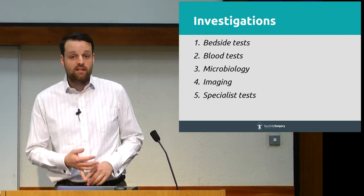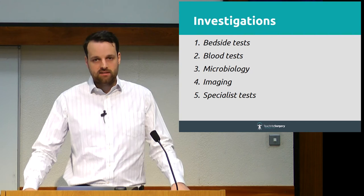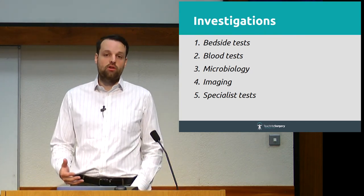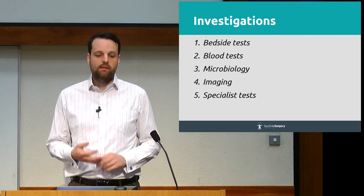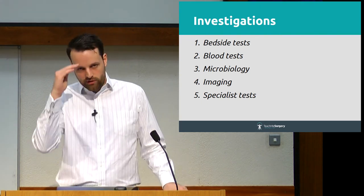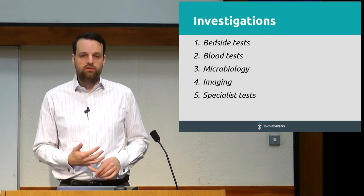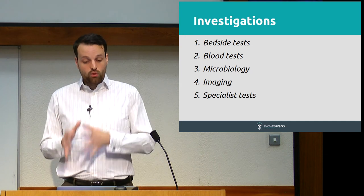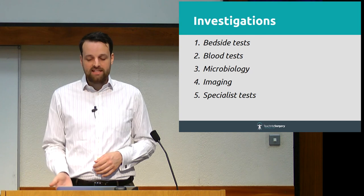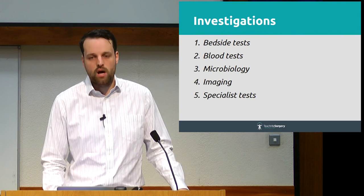Next, let's think about investigations — and again, let's use a rule of five. Number one: bedside tests. Number two: blood tests. Number three: microbiology — what are you going to culture? Number four: imaging. Number five: specialist tests. If you think through this system of five for every patient you clerk, you won't miss organising something important early on — for example, getting cultures done before initiating antibiotics — and you won't create unnecessary delays. If you see a patient who needs a scan, organise it now, knowing it might take some time.